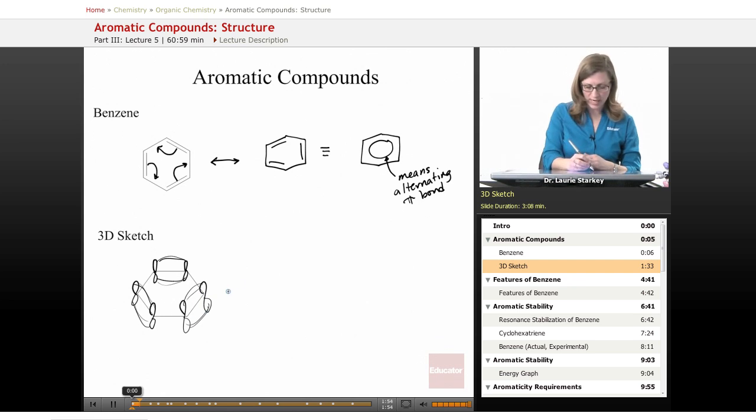But then if we take a look at the second Lewis structure—I've kind of tipped it over on its side so it's a little easier to see—we still have a p orbital on every carbon. But now the pi bonds have shifted to be between these two p orbitals and these two p orbitals and these two p orbitals.